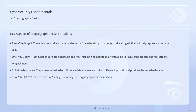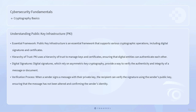Cryptographic hash functions are another crucial component of cryptography. These functions take an input and return a fixed-size string of bytes — the output is typically a digest that uniquely represents the input data. Hash functions are designed to be one-way, meaning it should be computationally infeasible to reverse the process and recreate the original input from the hash value. They are also expected to be collision-resistant, meaning no two different inputs should produce the same hash value. SHA-256, part of the SHA-2 family, is a widely used cryptographic hash function.